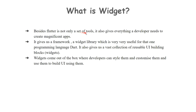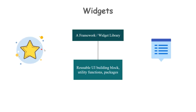Now let us move to the second term: Widget. Besides being a set of tools, Flutter also gives developers everything they need to create magnificent apps. It provides a framework — which we can also call a widget library — that is very useful for Dart. It gives us a vast collection of reusable UI building blocks, known as widgets. Widgets come out of the box; developers can style, customize, and use them to build UI. In summary, a widget refers to a framework or widget library, providing reusable UI building blocks, utility functions, or packages.